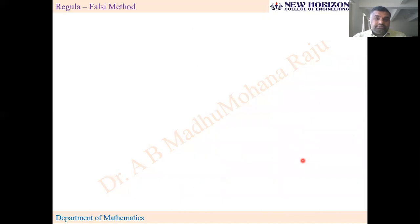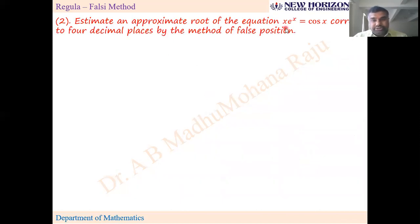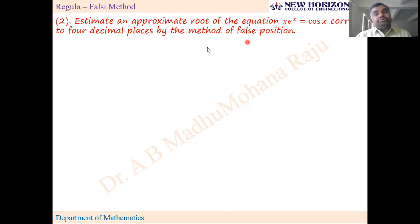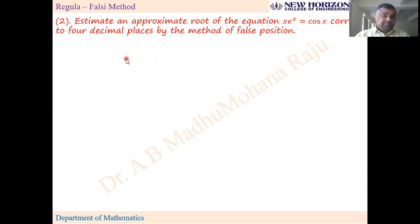Next problem: estimate an approximate root of the equation x·eˣ = cos x, correct to four decimal places, by the method of false position. One important point to remember: whenever trigonometric functions are there in the given function, while calculating f(0), f(1), f(2), etc., we are substituting radian values, so don't forget to put your calculator in radian mode when doing this type of problem.